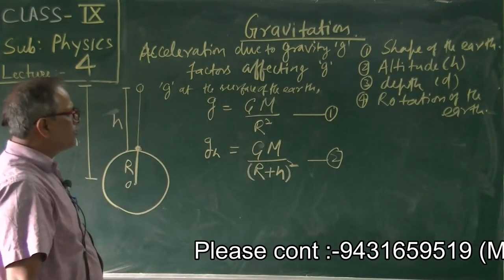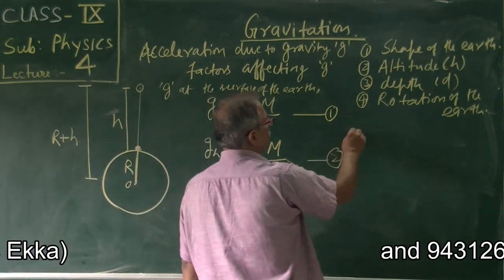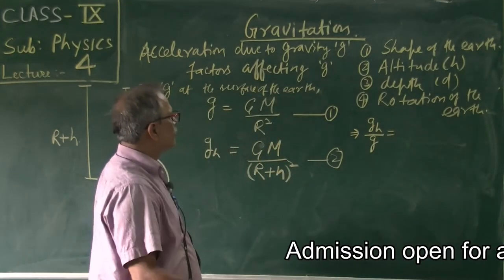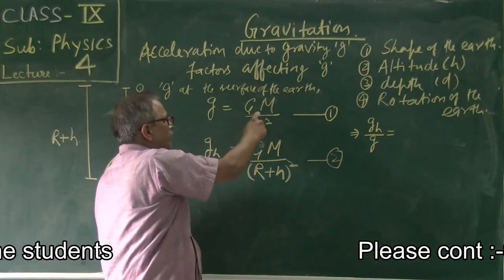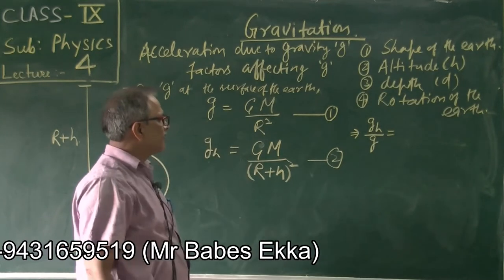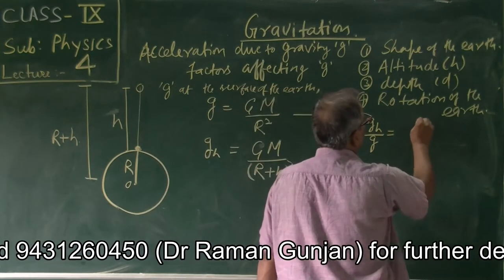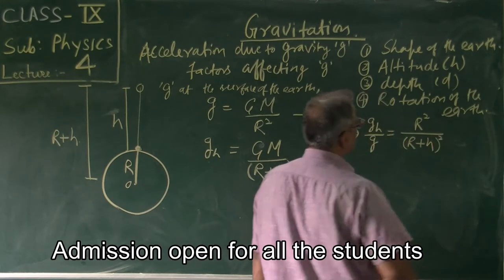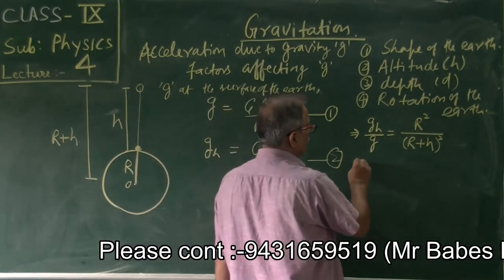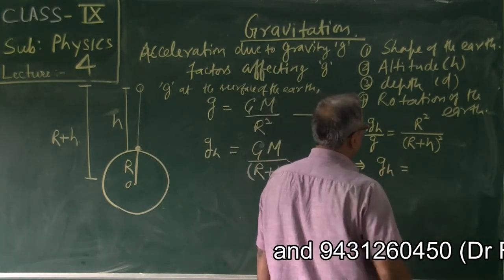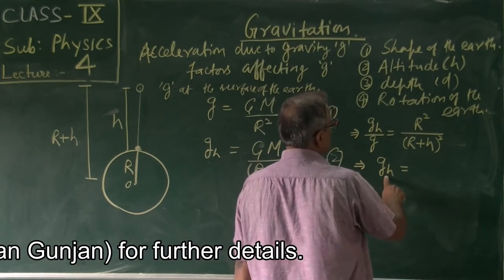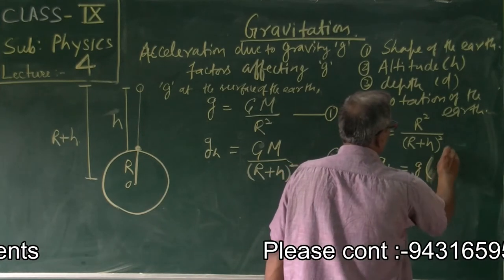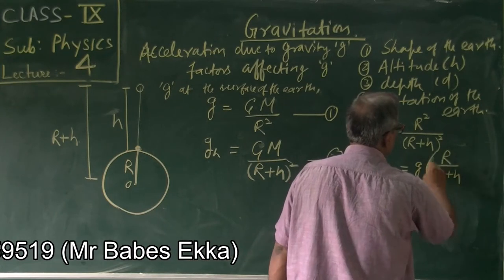From expressions 1 and 2, if we take the ratio g_h by g, the GM terms cancel each other and we get r square by r plus h whole square. So acceleration due to gravity g_h at height h from the surface of the earth is given by g into r by r plus h whole square.